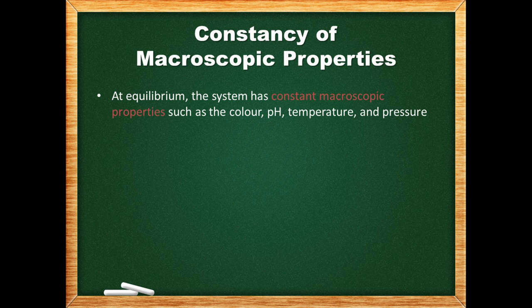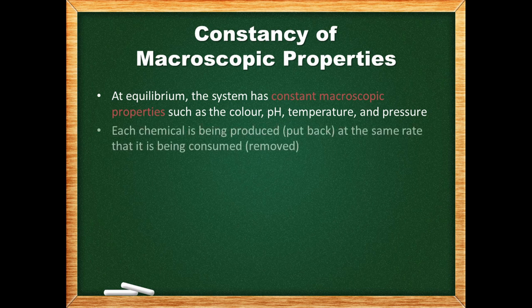A system at equilibrium has constant macroscopic properties such as color, pH, temperature, and pressure, because the amount of each reactant and product remains constant. Each chemical is being produced at the same rate that it is being consumed.